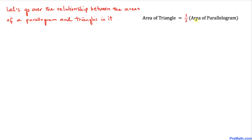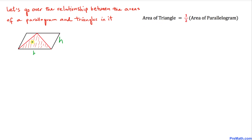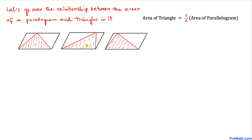In this first example, we have a shaded triangle inside a parallelogram. Since this triangle has the same base and the same height h as the parallelogram, the area of this triangle is one-half times the area of the whole parallelogram. Likewise, the next two shaded triangles inside their parallelogram also have area equal to half the parallelogram, because they share the same base and height.